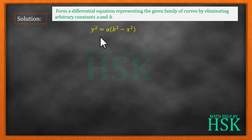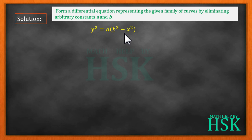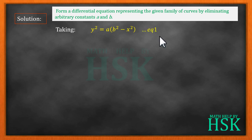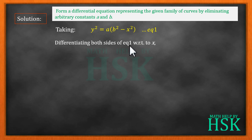The first thing to note is that because this equation contains two arbitrary constants, as a rule we would have to differentiate this equation two times to get the required differential equation. So first I assume this is equation number one, and I'm going to differentiate both sides with respect to x.